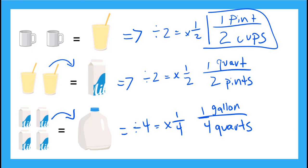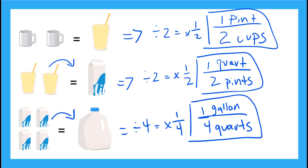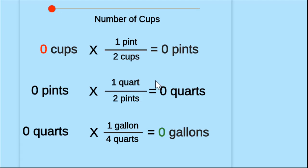So these fractions are my conversion factors when I want to find the top number's units. Here we have our conversion factors — these fractions — and we know what they really mean: one pint is equal to two cups, one quart is equal to two pints, and one gallon is equal to four quarts. Everything is zero here because we're starting with zero cups, but I'm going to change the number of cups and we'll see how they all relate to each other.